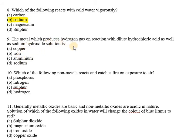Question number 9: which metal produces hydrogen gas on reaction with dilute hydrochloric acid as well as sodium hydroxide solution? We need to find a metal that reacts with both acid and base. There is only one such metal — aluminum. Copper doesn't react with sodium hydroxide, and iron doesn't react with sodium hydroxide either.